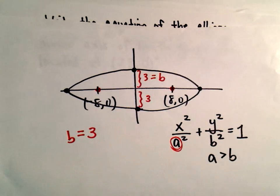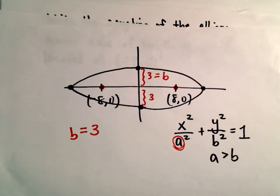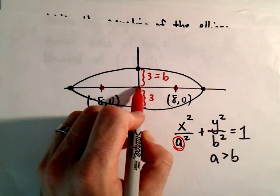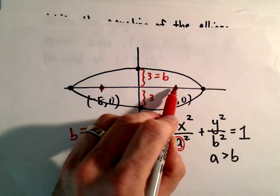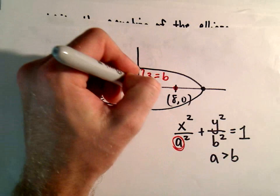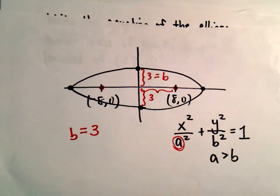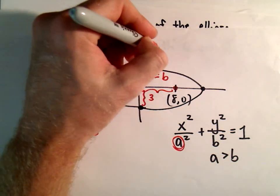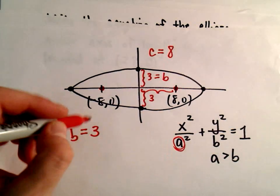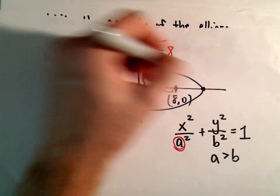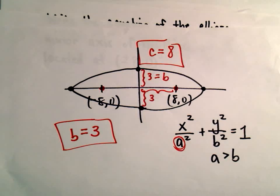And what we're trying to figure out now is our a value. We also know that the distance from where it's centered, which is the origin, out to one of the foci, that's going to be our c value. So our c value equals 8.